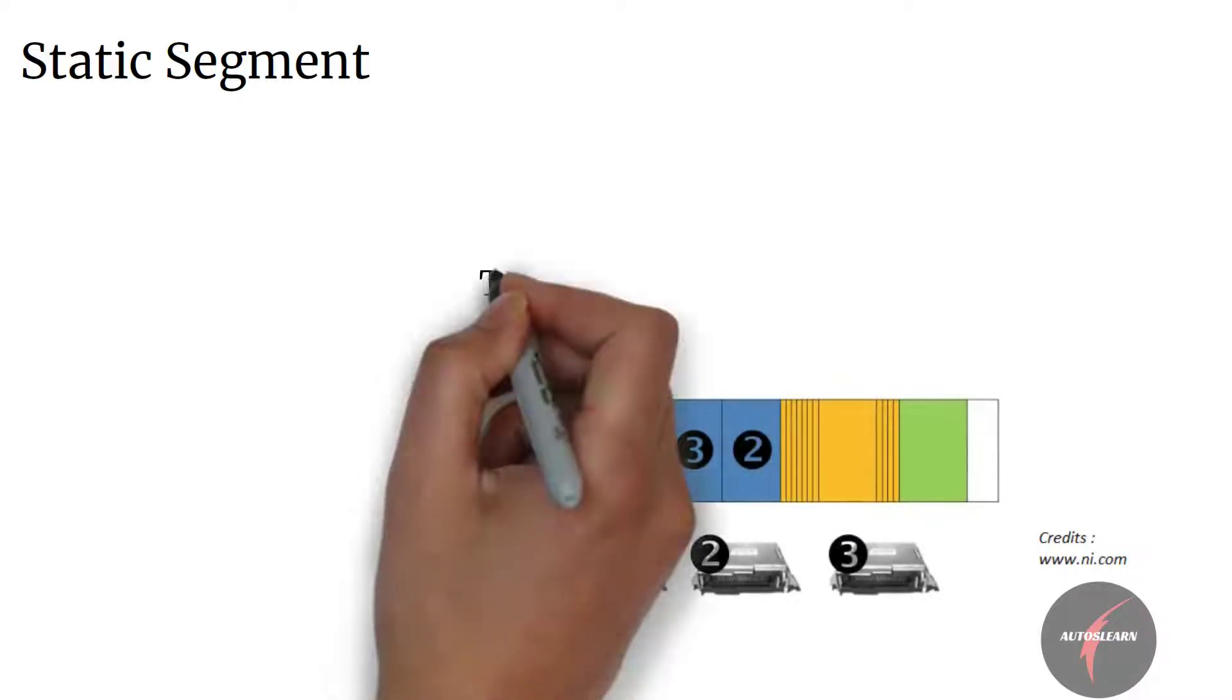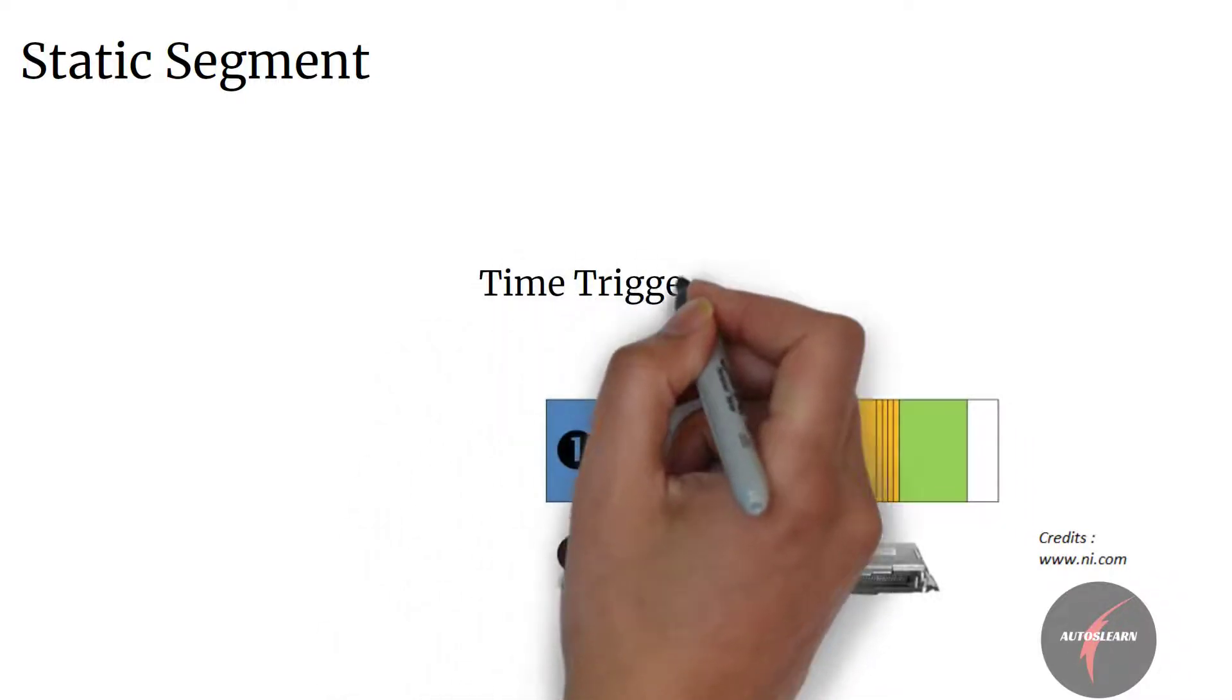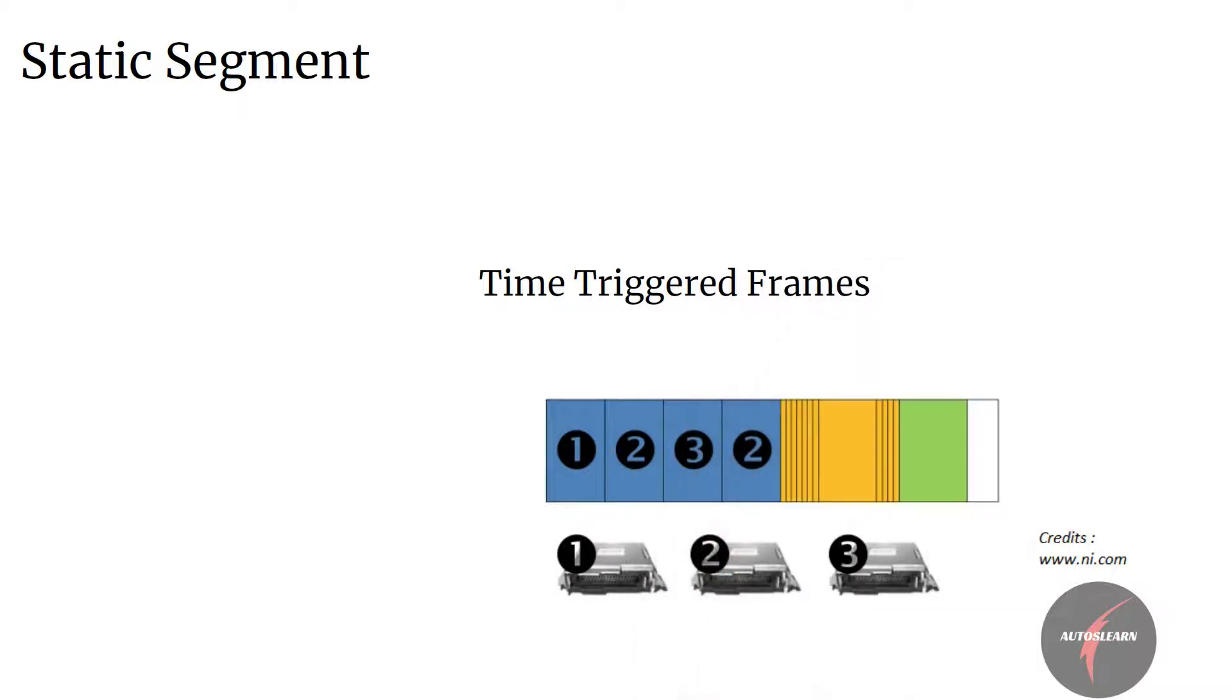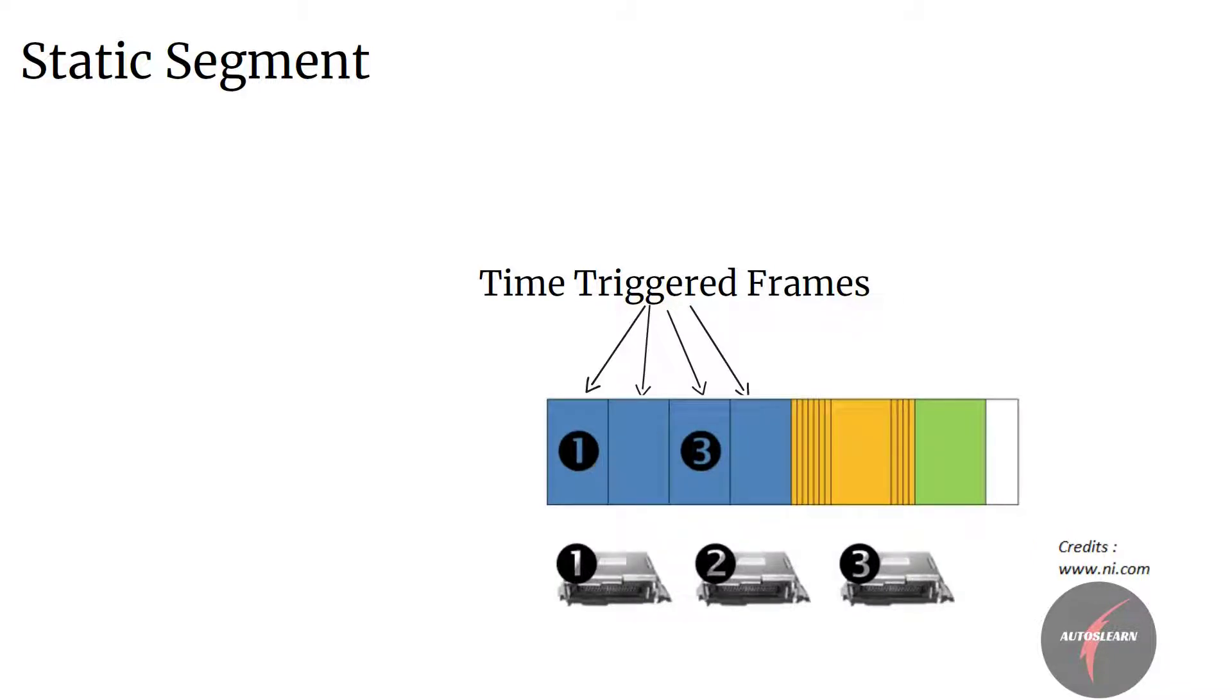Static segment is a segment dedicated for scheduling a set of time-triggered frames. The segment is broken up into slots, each slot containing a reserved frame of data for each ECU. Hence, when each slot occurs in time, the reserved ECU has the opportunity to transmit its data into that slot. If in case an ECU misses the slot, then it has to wait for the next cycle to transmit the data in that slot.